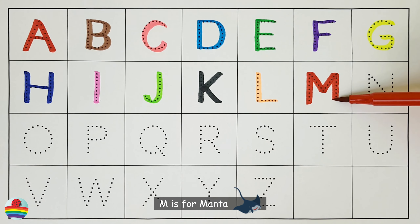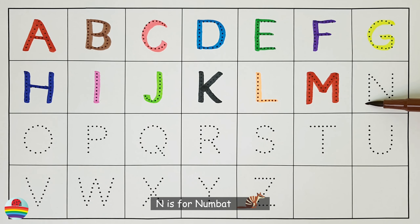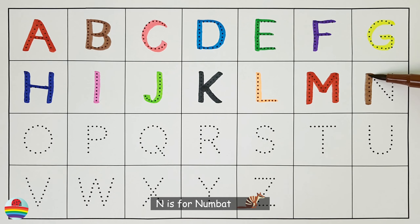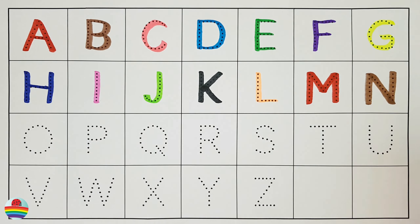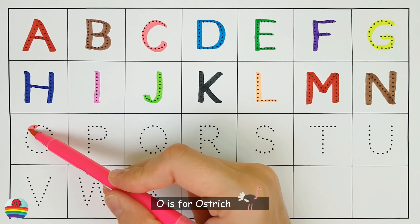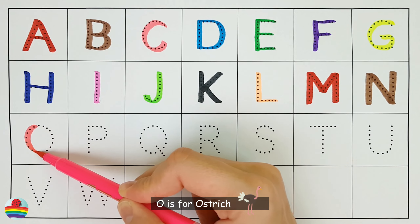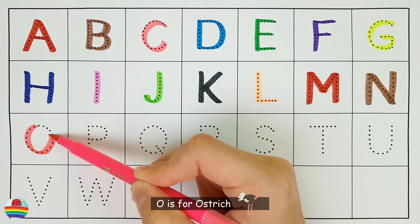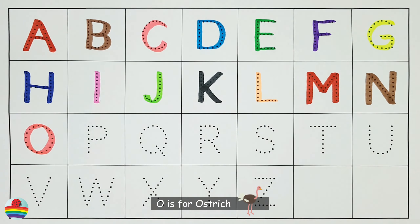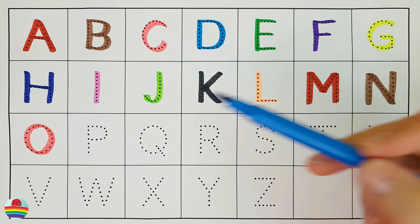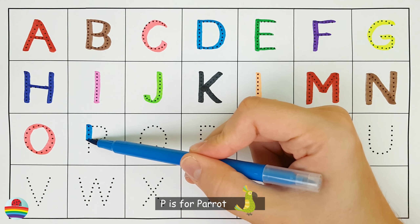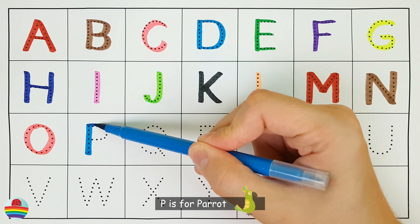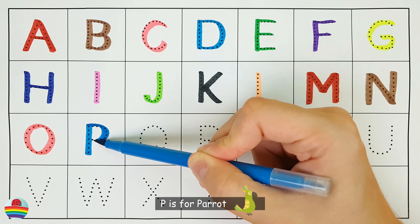M is for manta. N is for numbat. O is for ostrich. P is for parrot.